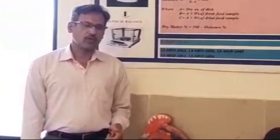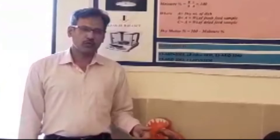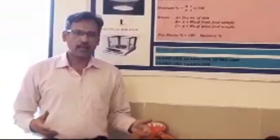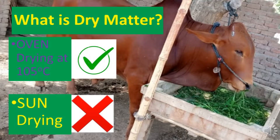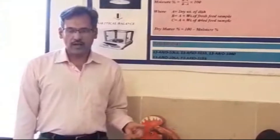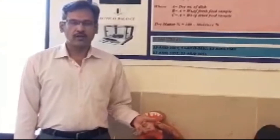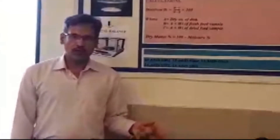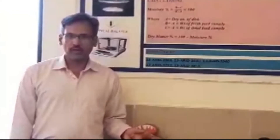To find the dry matter content of a feedstuff, you can follow the book value, or if you have an oven, you can dry your sample directly. For commercial feed, the label reflects the dry matter content of that concentrate or feed formula. For drying, you need a drying oven.